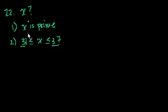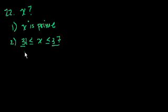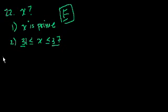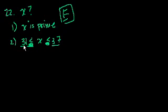So it doesn't help us much, even used in combination. Statement 2 alone is definitely useless because it's a range of six numbers. And even if we know x is prime and combine both statements, all we know is that x is either 31 or 37. So the answer is E — together, they're not sufficient. If the range had excluded 31 or 37, we could have determined x uniquely, but they didn't do that.